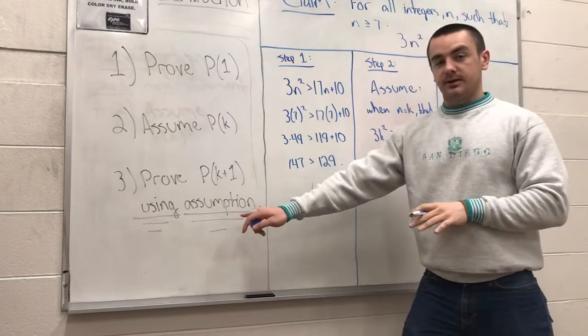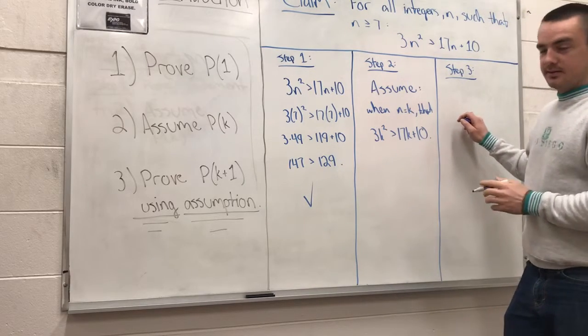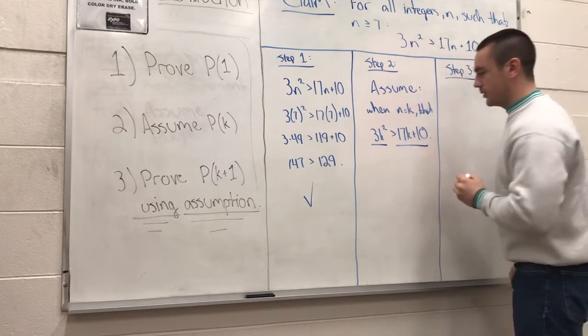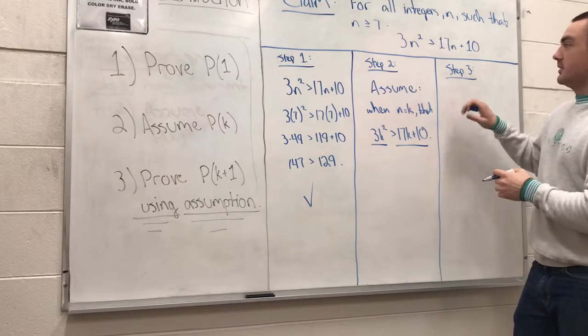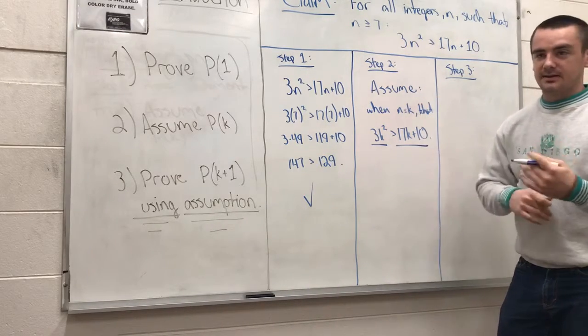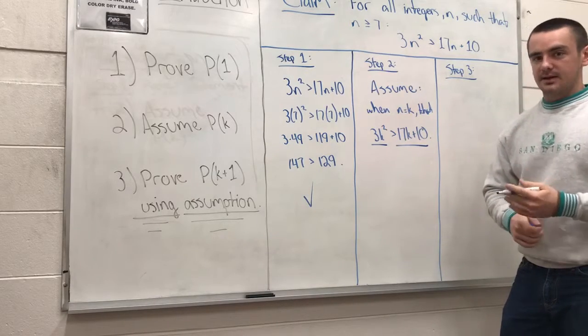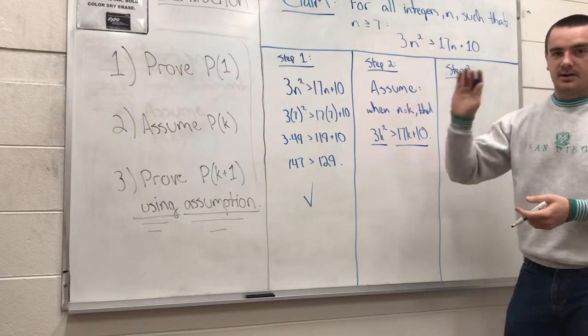Now note that we're going to use the assumption to prove this thing. This is going to be important. Now we'll move on to our final part, which is proving it true for k plus 1, which allows us to get that climbing the ladder effect, or we can think of dominoes falling over successively forever.